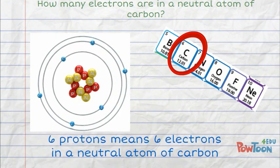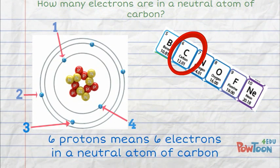You could use this information to find out how many electrons are in a neutral atom of carbon. Since it has 6 protons, it also should have 6 electrons.